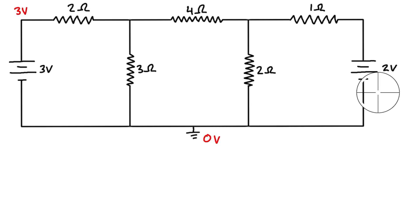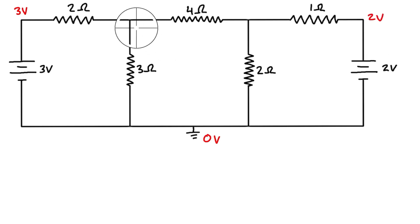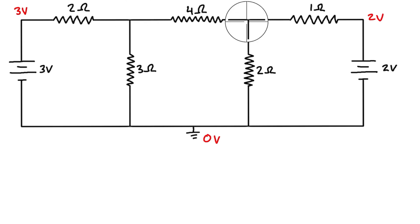When we cross this voltage source it's going to jump by two volts, so this node up here is going to be equal to two volts higher than ground. Looking at the circuit, we only have two remaining unknown node voltages. Let's call the voltage of this node Va and the voltage of this node Vb.